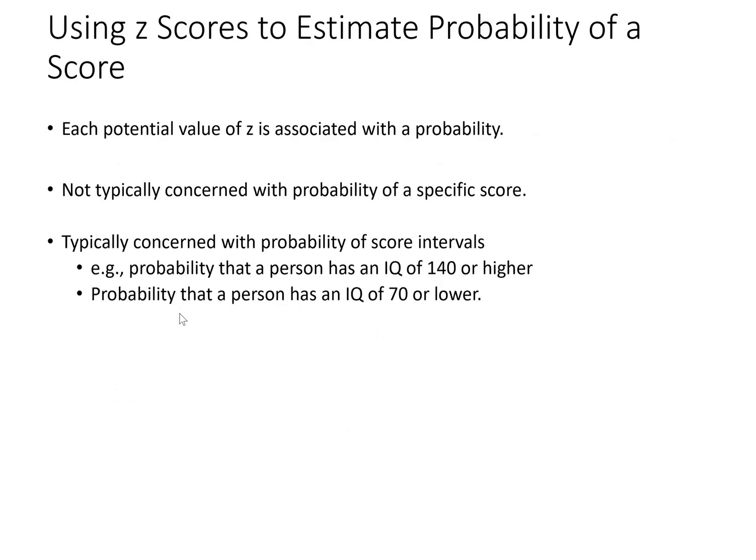Usually we don't estimate the probability of a single particular score — we're more interested in intervals of scores, such as the probability that a person has an IQ of 140 or higher, 140 or lower, or 70 or lower. We'd combine z-scores with what we know about the normal distribution, assuming a normal distribution, to determine the probability of a score interval.